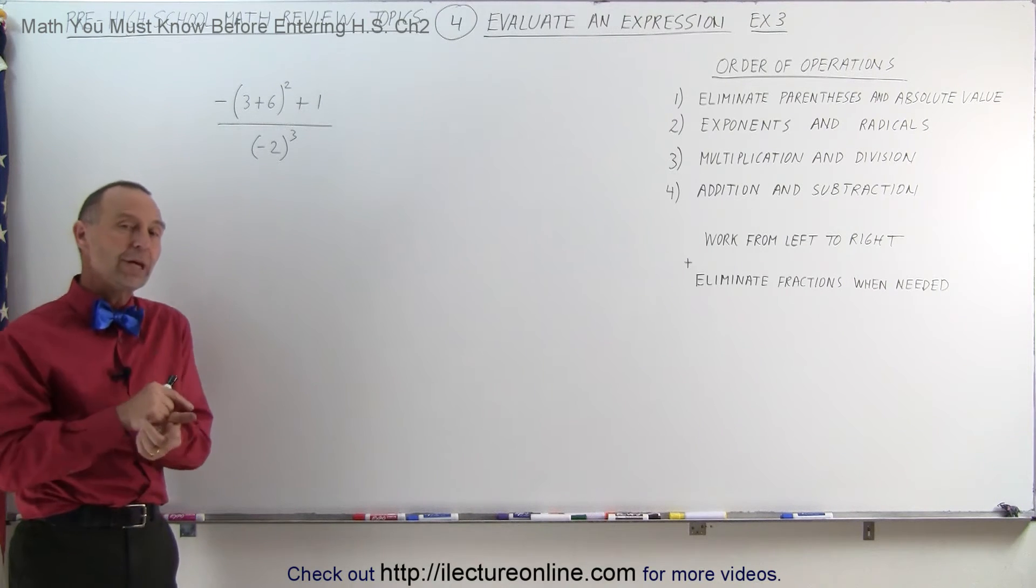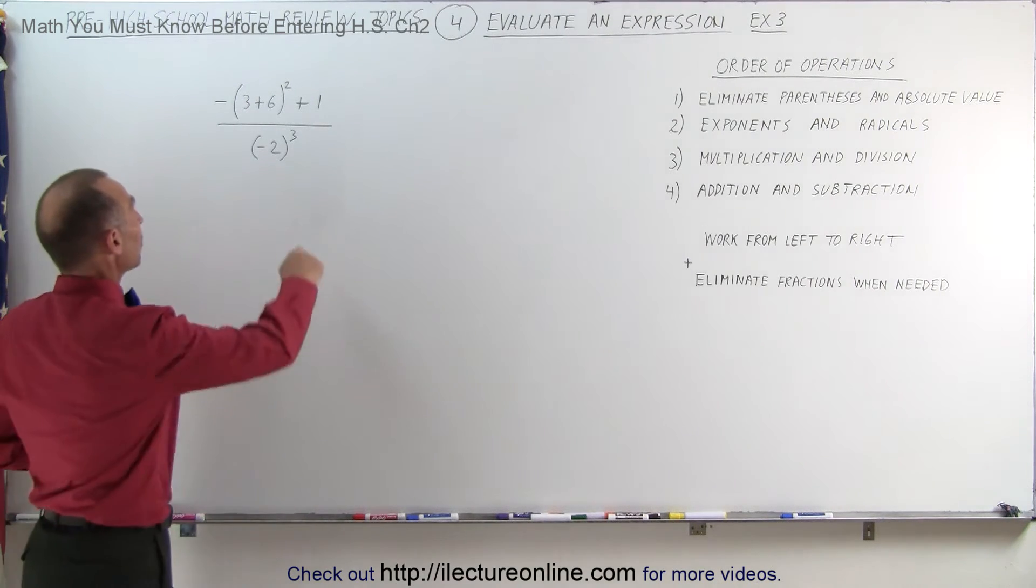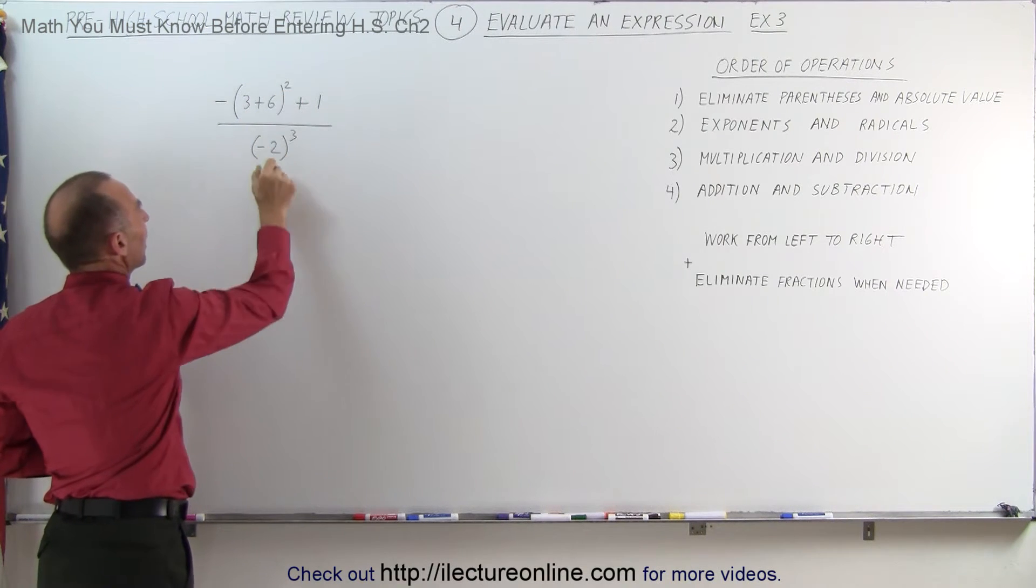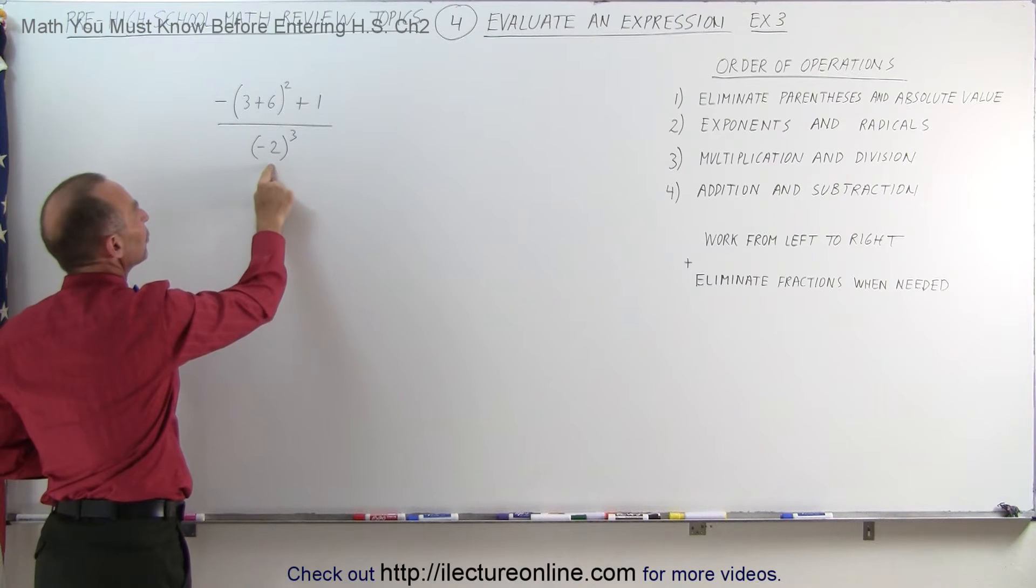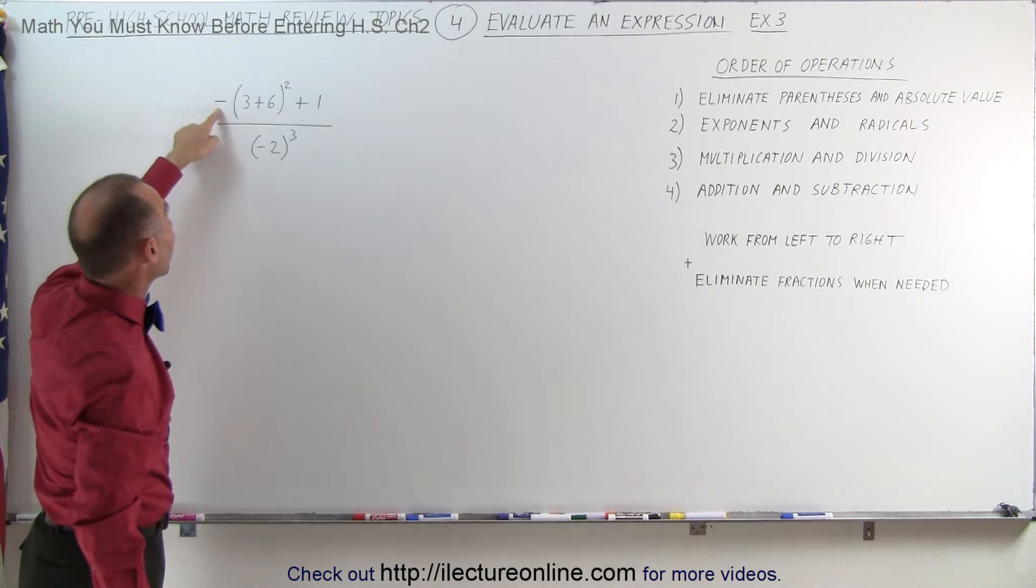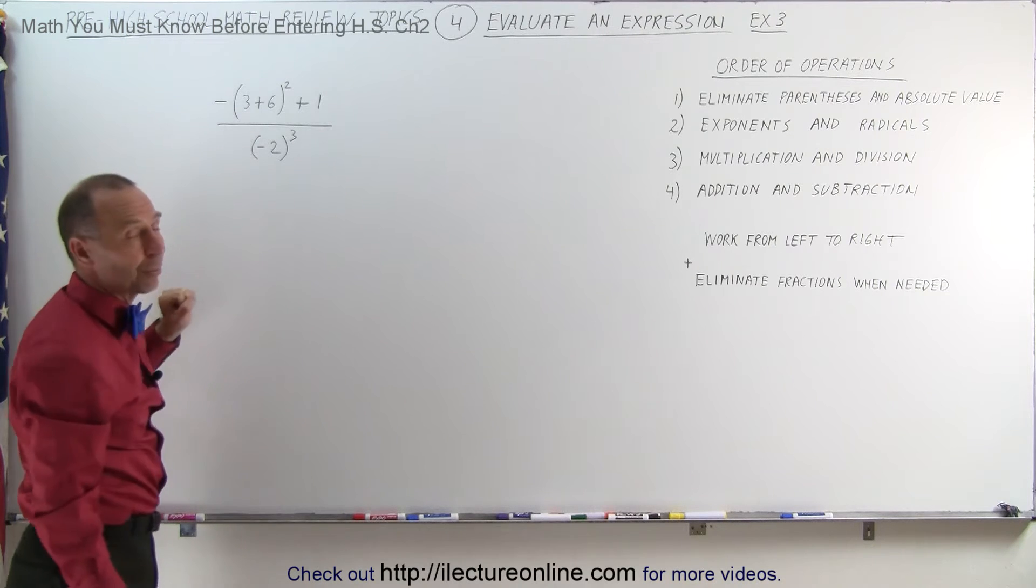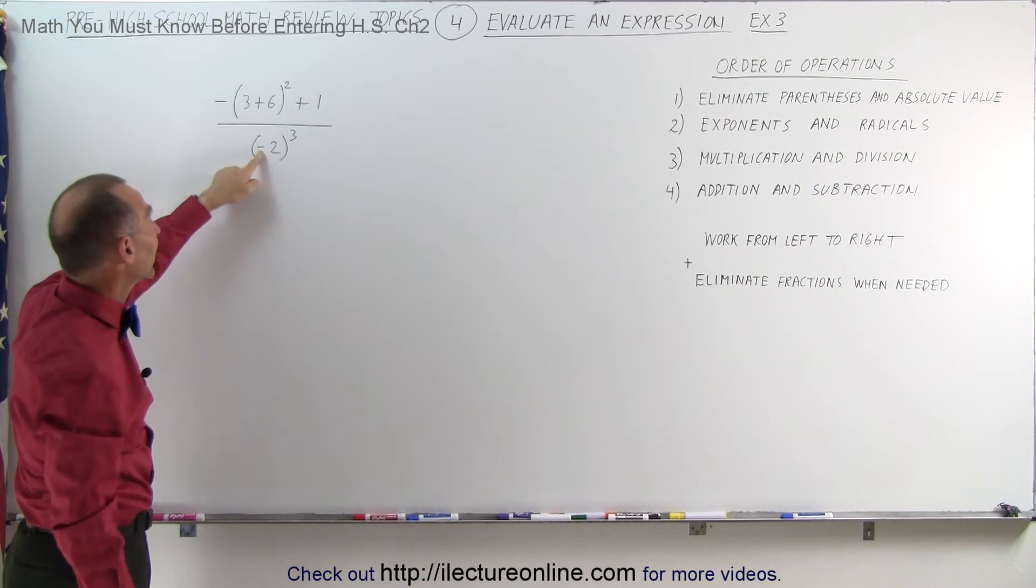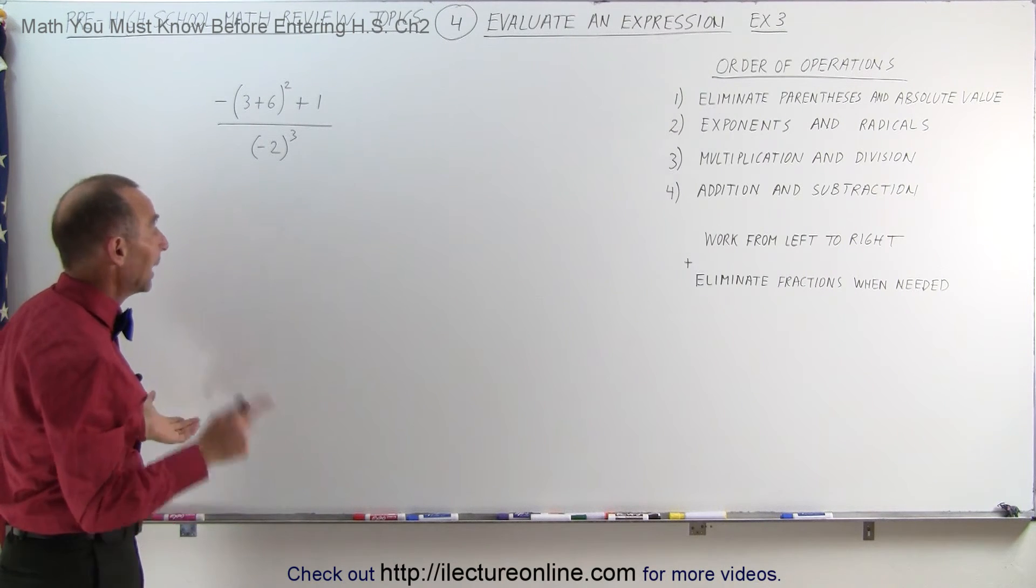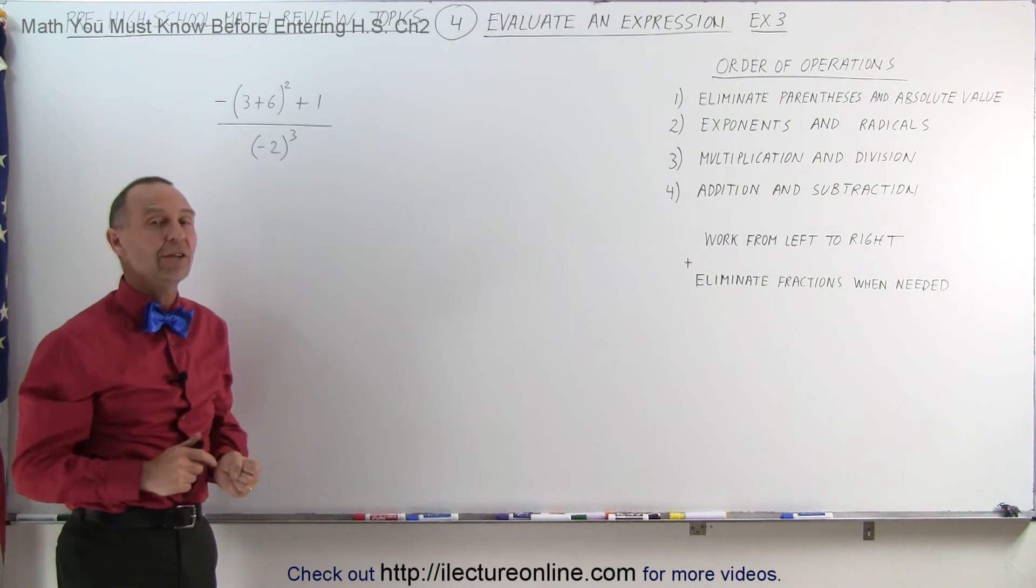Notice that both the numerator and the denominator have an exponent. Here we have the quantity 3 plus 6 to the second power, and here we have the quantity negative 2 to the third power. Notice that in the numerator we have a negative sign, but it's outside the parentheses. In the denominator we have a negative sign, but it's inside the parentheses. The question is, does that matter? And the answer is, it definitely does.